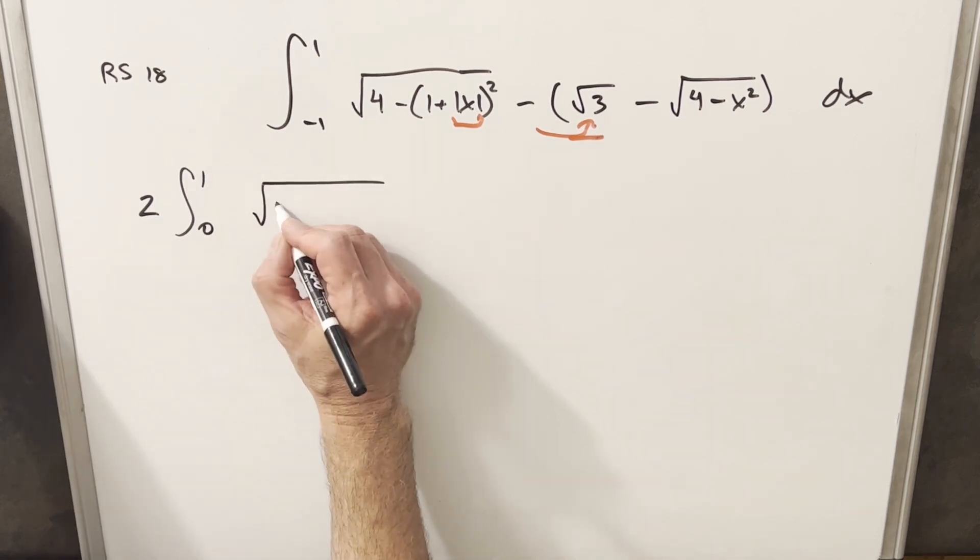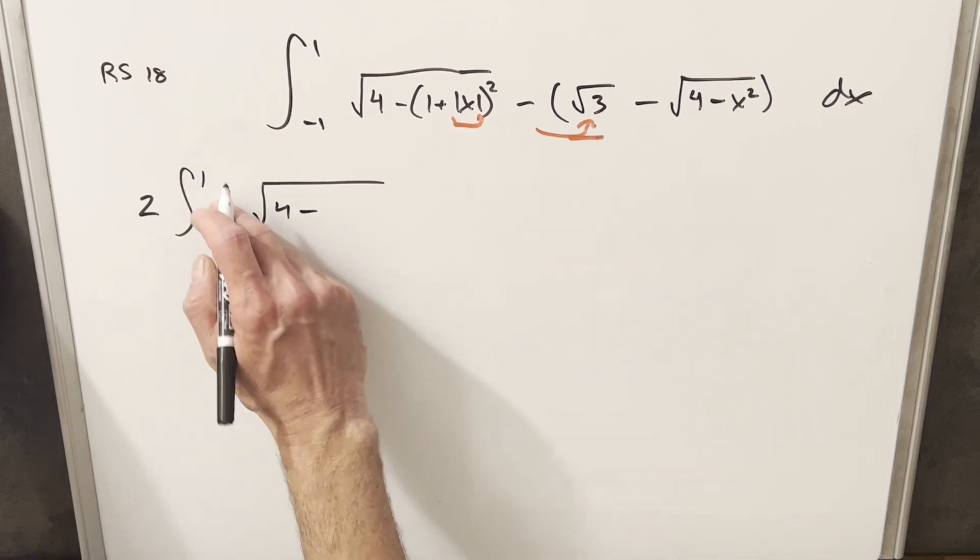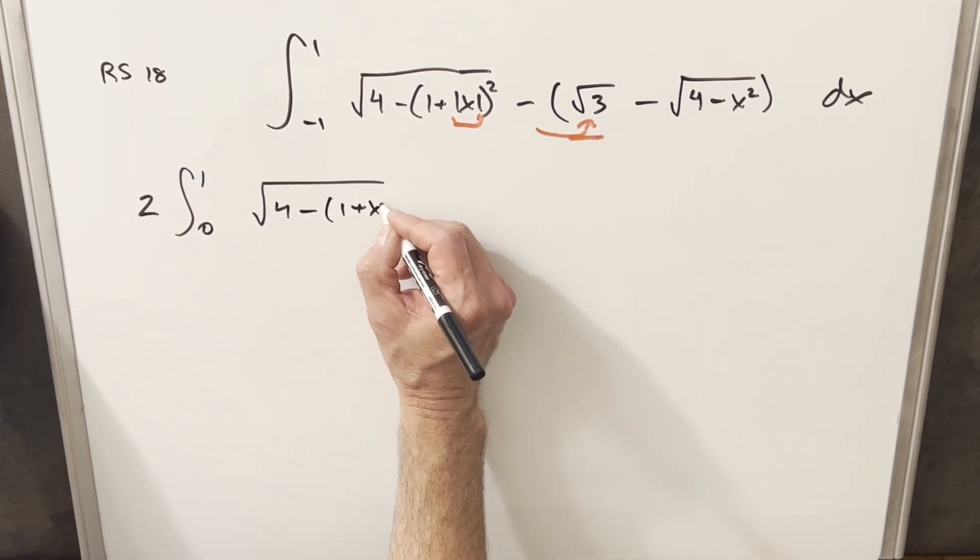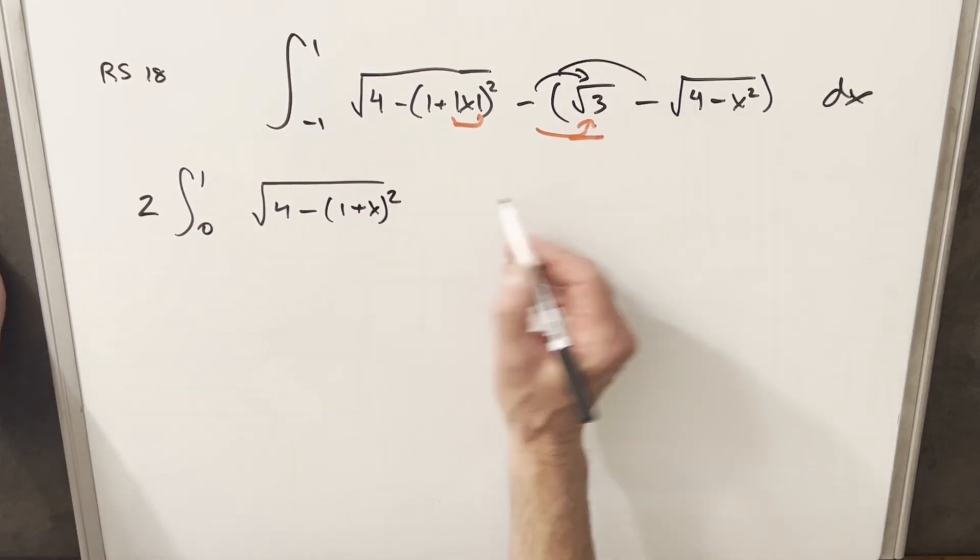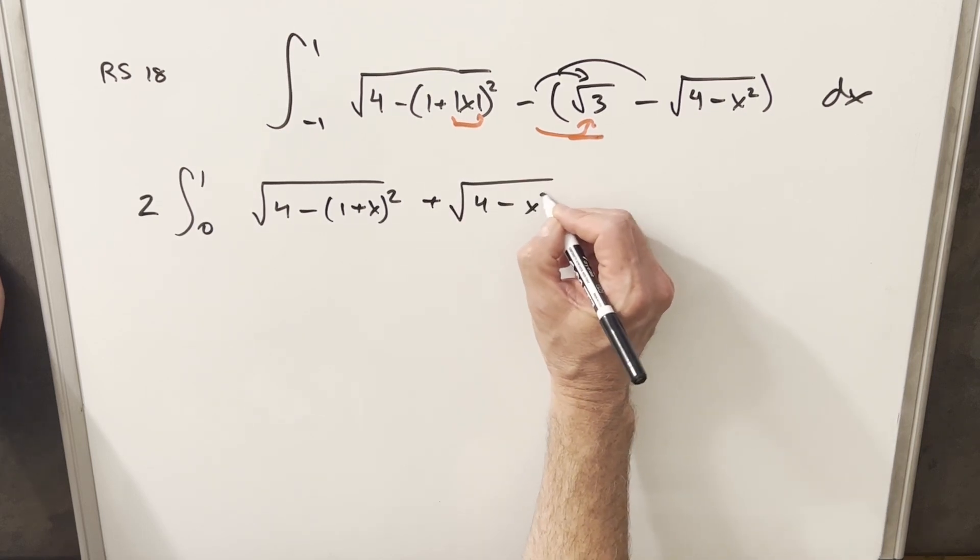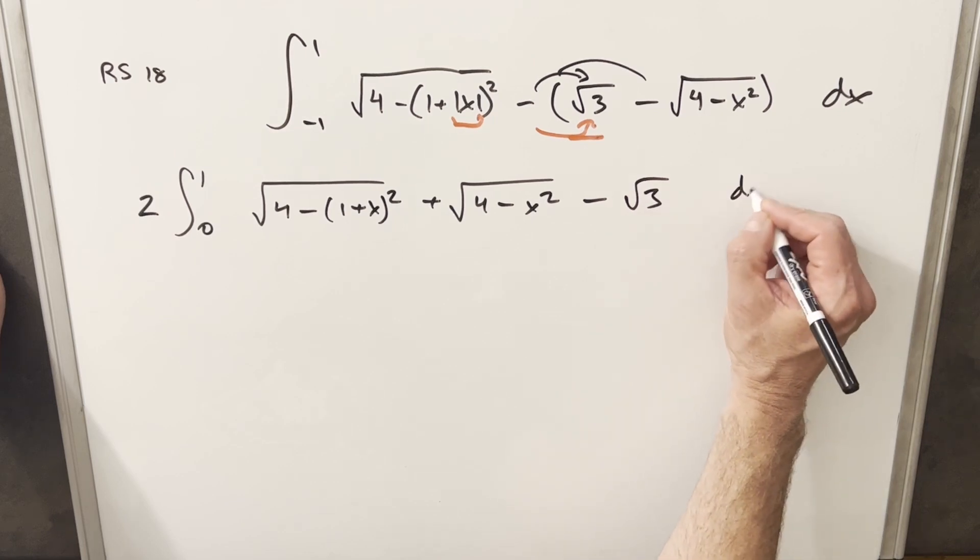And then I'm going to do a quick rewrite. This is going to allow me to drop the absolute value on the X because now the bounds are positive. So I can write this as just one plus X squared. I'm going to distribute this minus sign. I'll change the order, so we'll have four minus X squared, and then distribute the minus here to get minus square root of three DX.